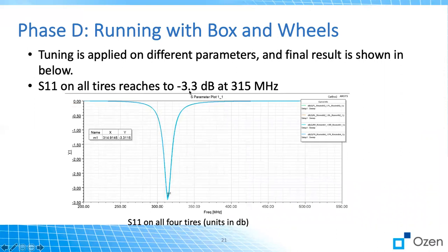When I say tuning, it means adjusting all the parameters we discussed: the thickness of the car box, the rim, and the antenna itself. Playing with these different parameters, S11 gets to around minus 3.3 dB. The antenna itself was minus 10 dB, but adding the rim and car box brings it from minus 10 to minus 3.3 dB.